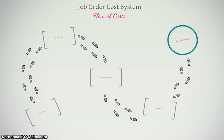A job order cost system is a type of cost system used for a manufacturing firm that is producing a product that is specific, customizable, or very individualized. It would be something that is definitely not uniform — they're not making the same things over and over all day. They're making something that is more specialized.